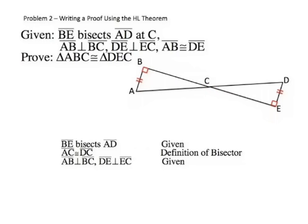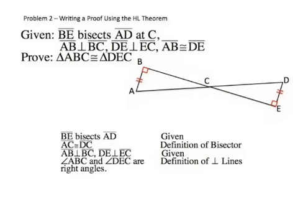Now we're going to pull out more of our given information and say that segment AB is perpendicular to segment BC, and that segment DE is perpendicular to segment EC, because it's given. The definition of perpendicular lines lets us state that angle ABC and angle DEC are right angles.